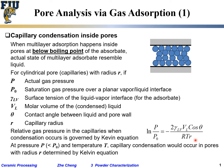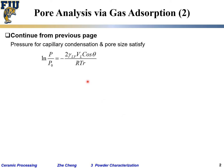As r goes towards infinity — pores getting larger and larger — this ratio becomes zero, so p/p0 approaches one. That means to cover a flat surface with liquid you need the pressure to reach equilibrium pressure for that temperature below the boiling point. That is essentially what the Kelvin equation tells us about the relationship between relative pressure and pore radius.